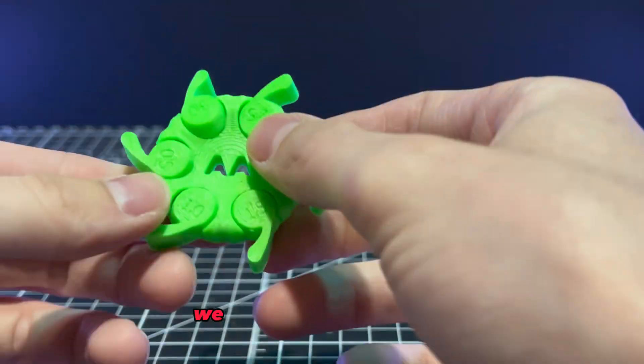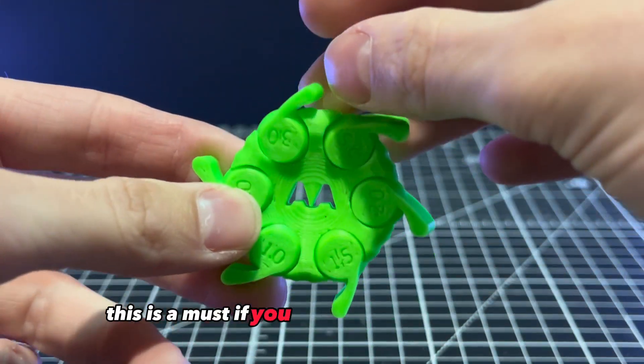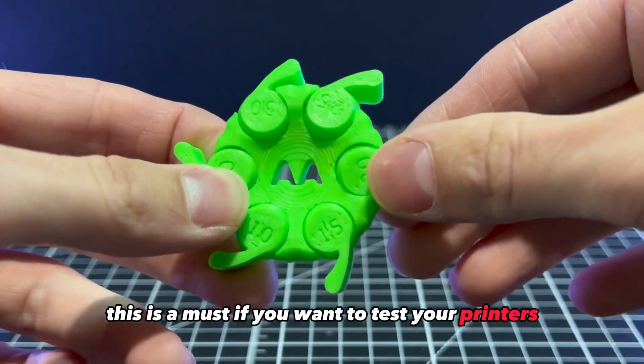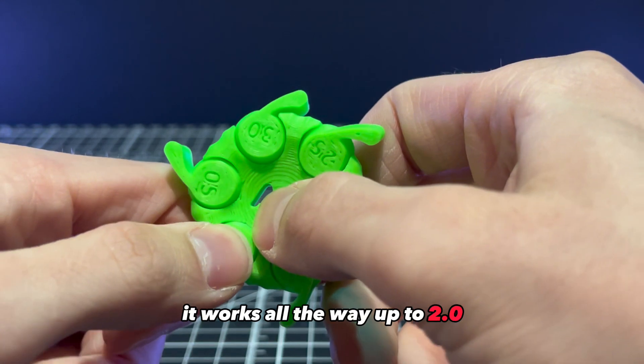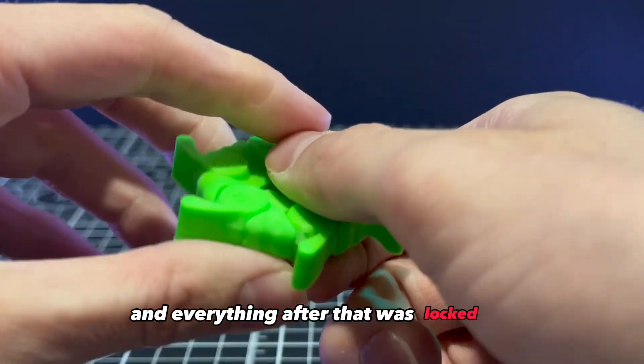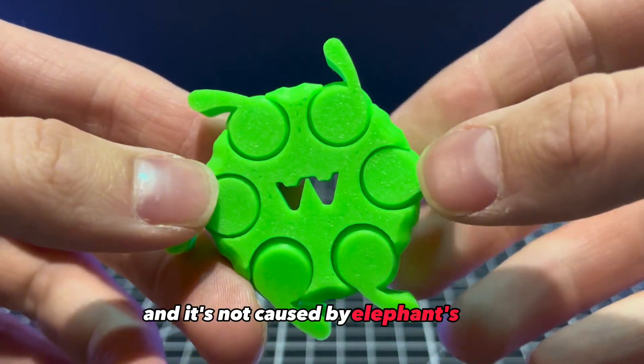Additionally we have the tolerance coin. This is a must if you want to test your printers. Now as you can see, it works all the way up to 2.0, and everything after that was locked up, and it's not caused by elephant's foot.